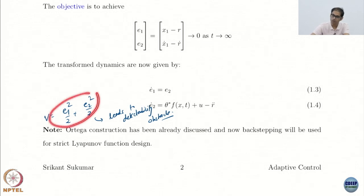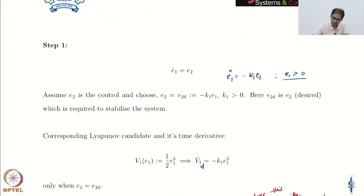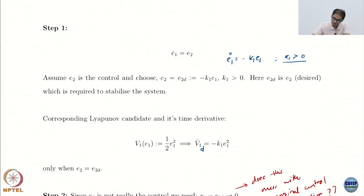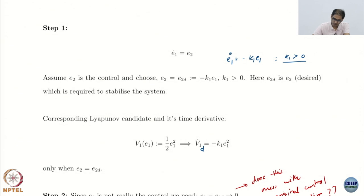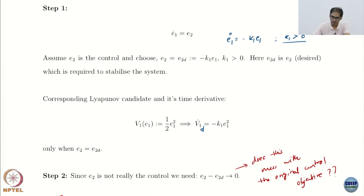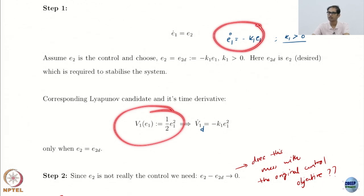This is a non-strict Lyapunov function even for the known case — you have seen the spring-mass-damper. Standard backstepping: we have E1 dot is E2. We assume E2 is the control and we design an E2 desired. What is E2 desired in this case? Just minus K1 times E1. We are simply trying to make this go to zero exponentially. Then the corresponding candidate Lyapunov function is one-half E1 squared. With this dynamics, I get V1 dot equals minus K1 E1 squared.